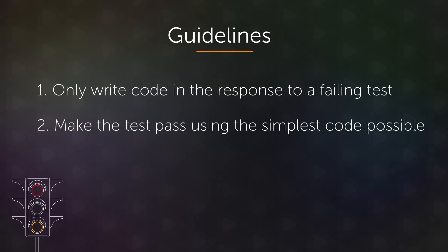The second guideline is to make the tests pass using the simplest code possible. This is where the majority of people criticize test driven development, because they believe that making the code work by the simplest means possible seems naive or wasteful. But that one act of doing the simplest thing possible to make the test pass is what ensures that your test suite is also robust and complete. These two guidelines work together.